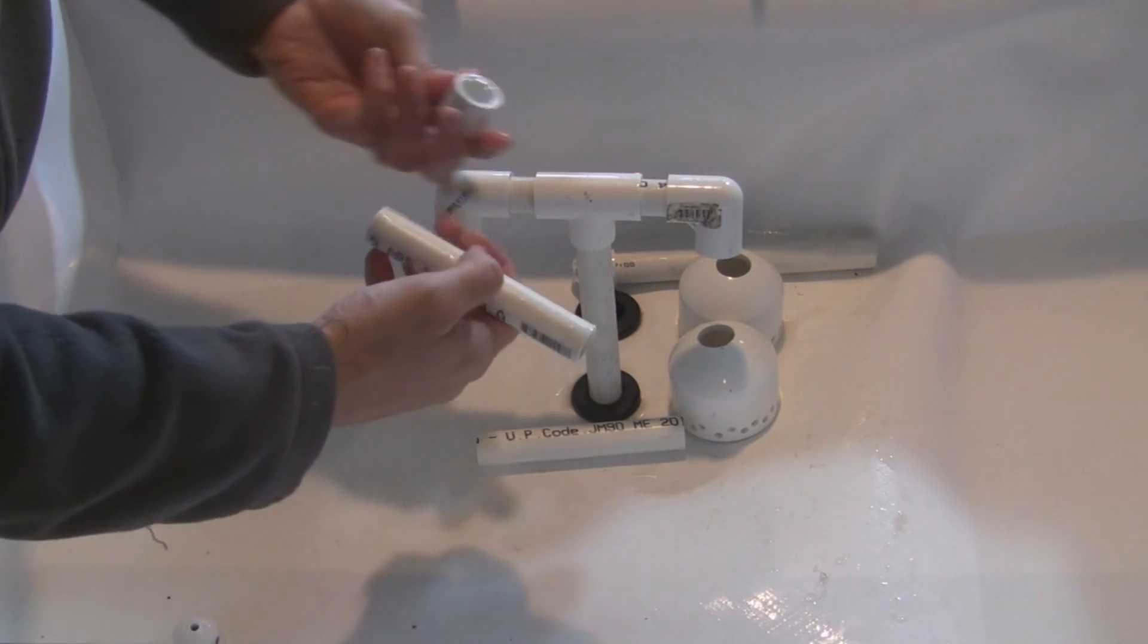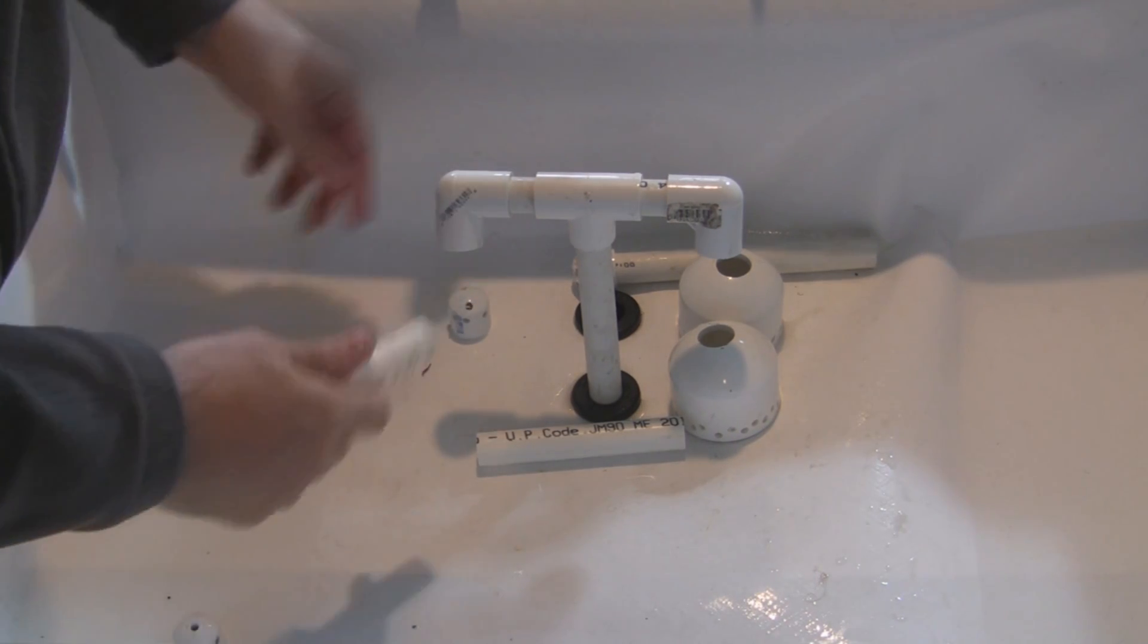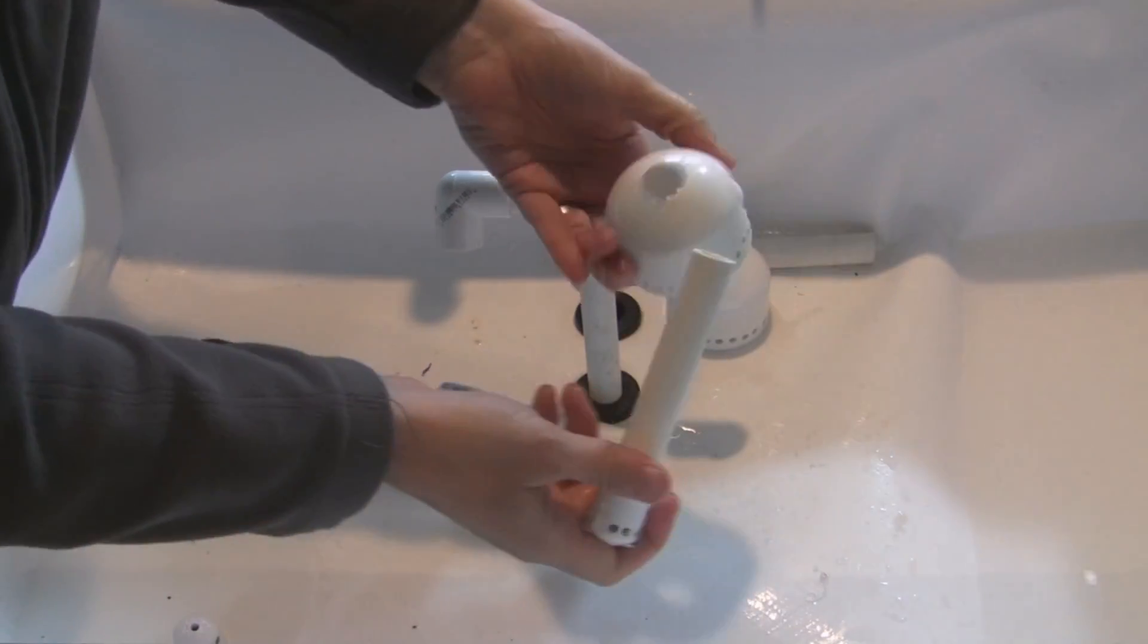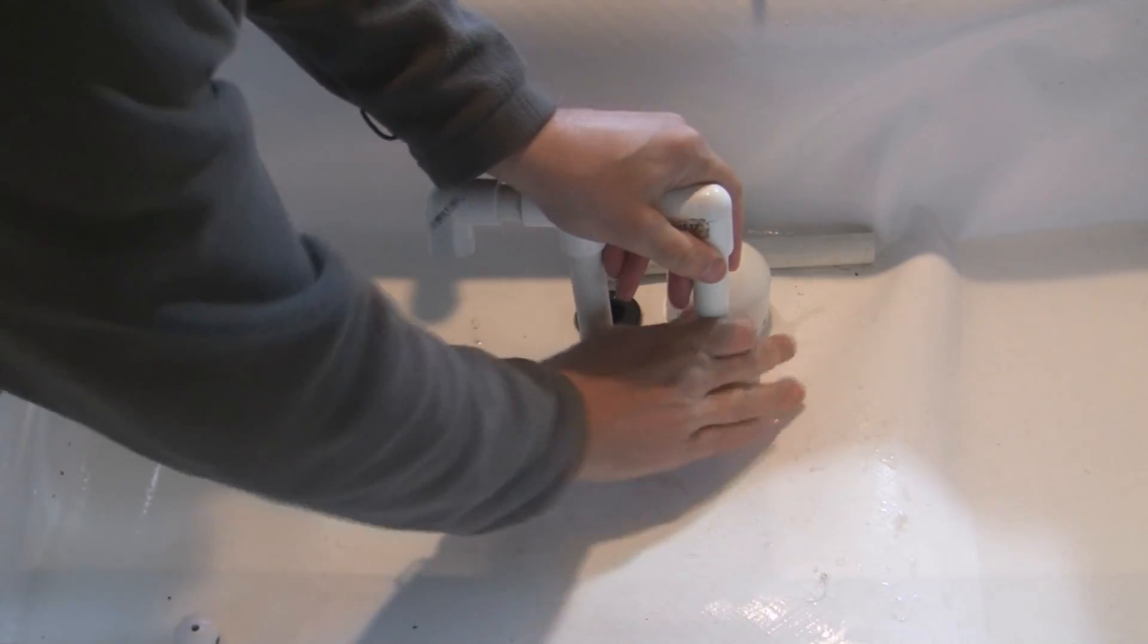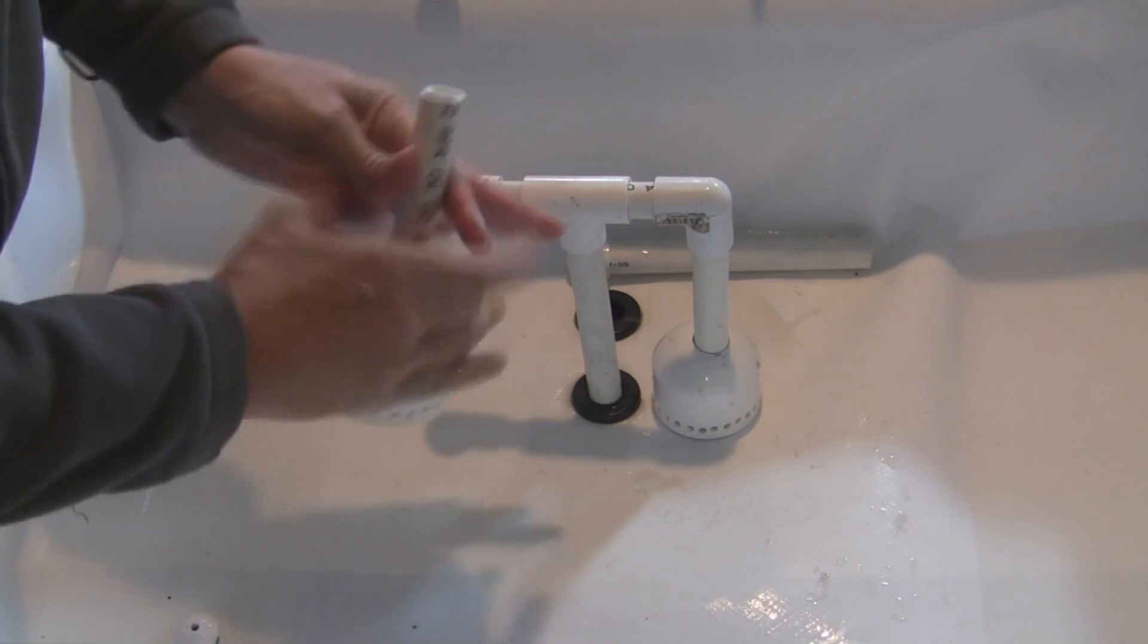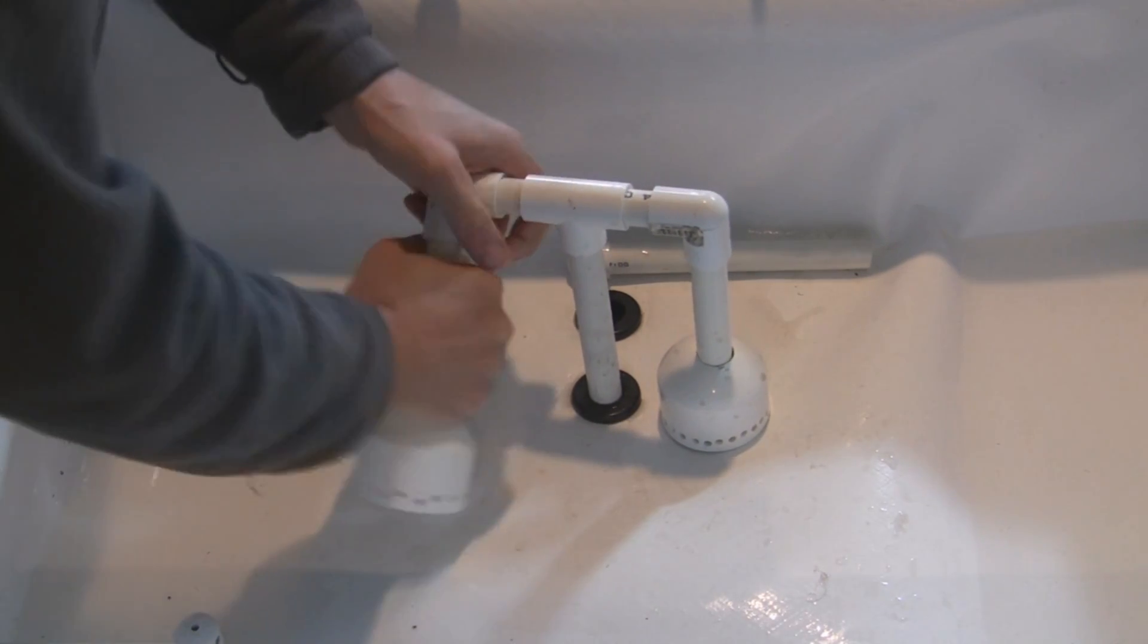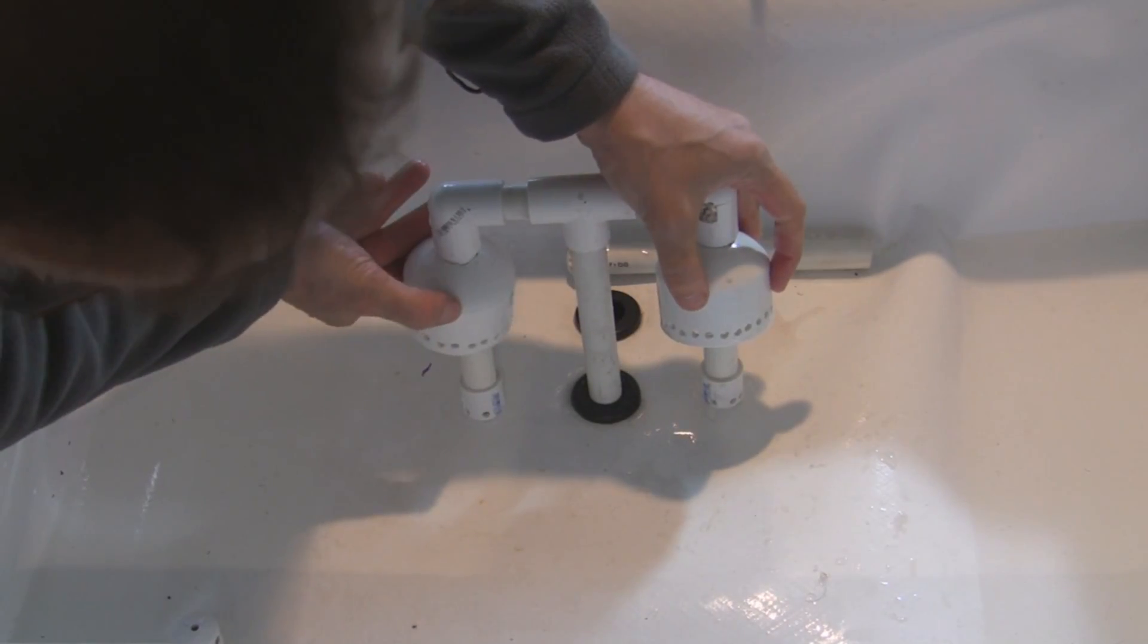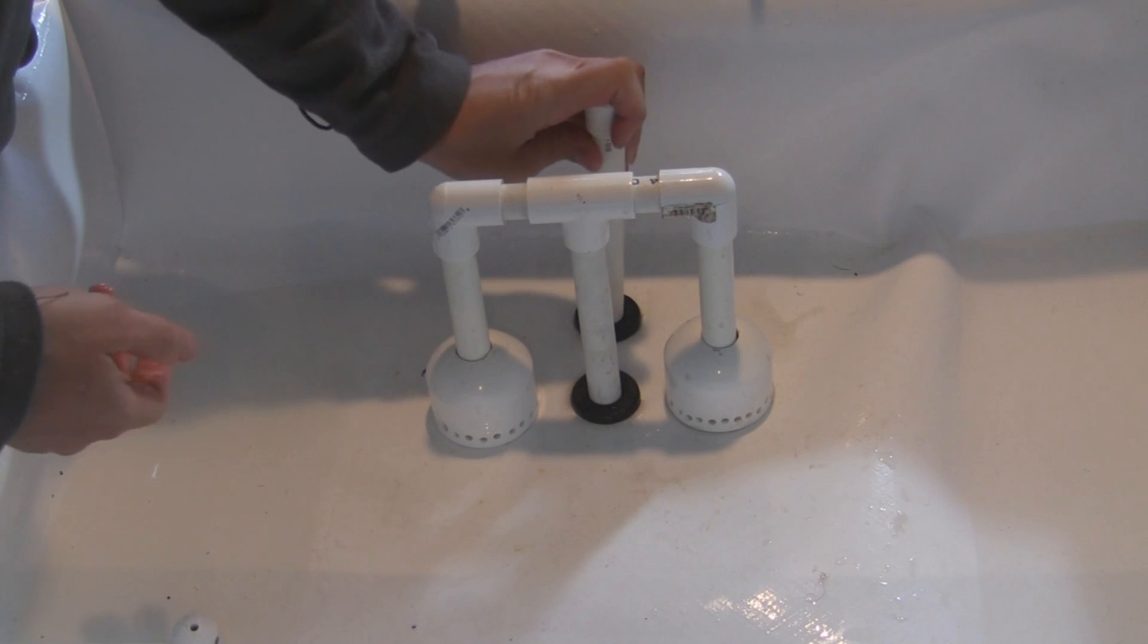We'll attach the caps to the inlet pipe, and then we'll put the media guards over the inlet pipes. And there it is, your EZT siphon. Lastly we'll put on the overflow pipe.